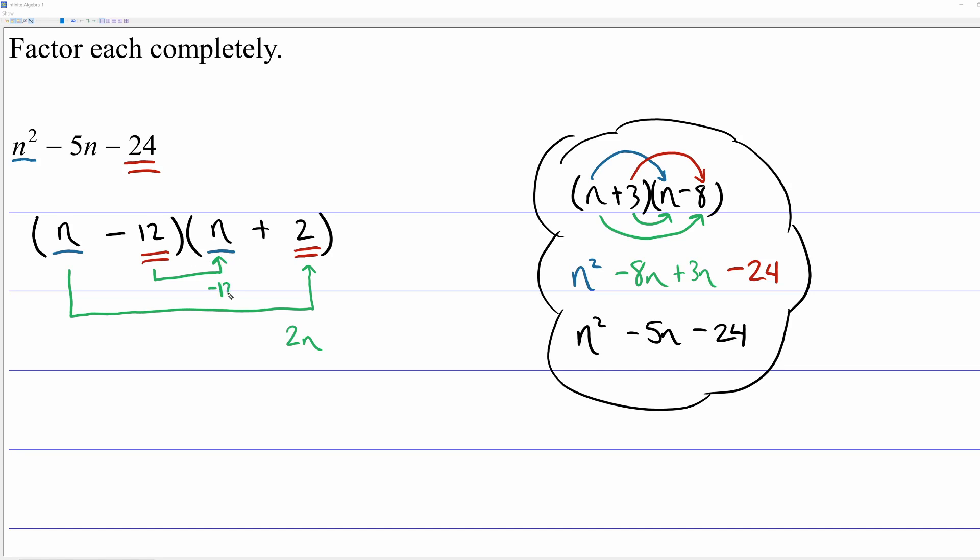And if you combine these two linear terms, negative 12 plus 2, well that would be negative 10n. And that's not what my problem has. My problem originally has negative 5n. So it's back to the drawing board. I have to test some other possibility.